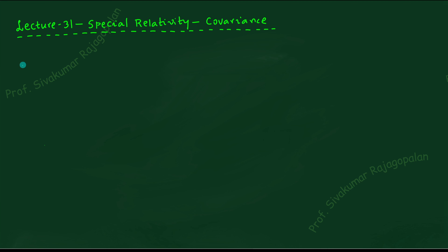Hello students, we are back to another lecture on special relativity. In the last class we proved that Maxwell's equations are not invariant under the Galilean transformation. The good thing about Galilean transformation is that Newton's equations of motion are invariant, and we can also show that Newton's law of gravitation — G times m1 and m2 divided by r squared — is also invariant. In conclusion, the equations of Newtonian mechanics are safe with the Galilean transformation, but the difficulty arises with Maxwell's equations.